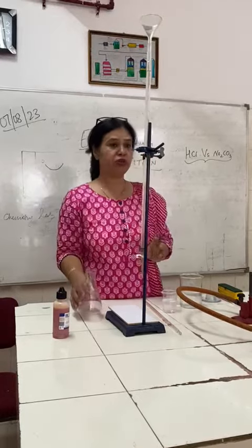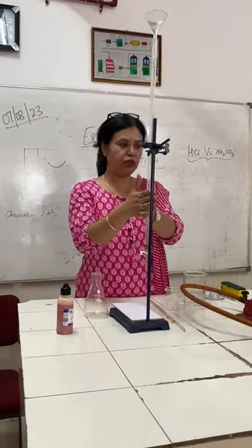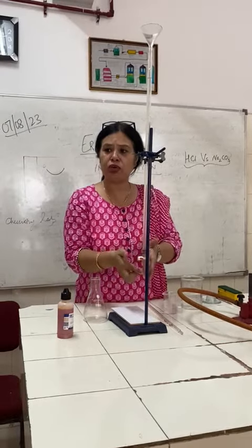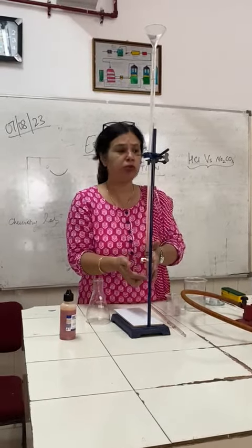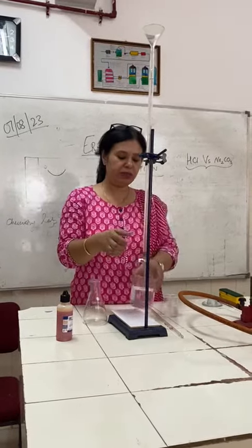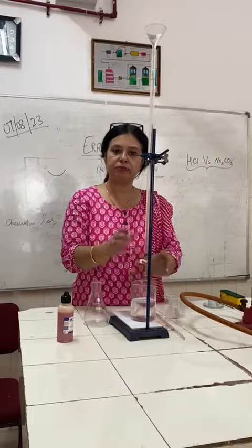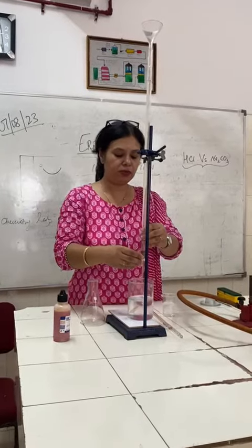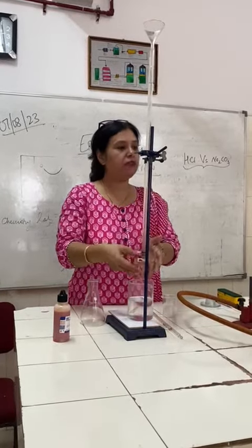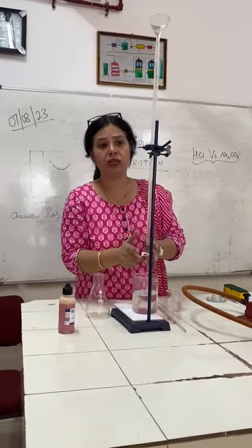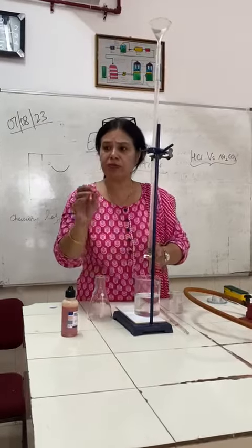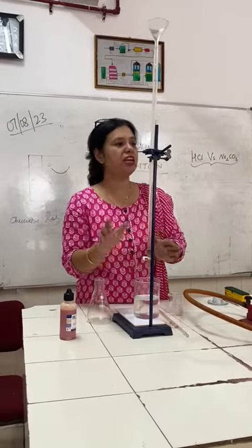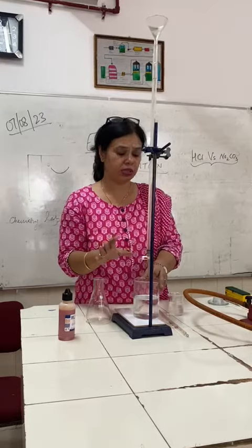The second mistake which we commonly do — we have to fill the apparatus up to the brim. Mostly students forget to fill it up to the brim. We have to put the beaker under the burette and open the tap so that it fills up to the brim with no bubble. Suppose a bubble is not going — it means it will be a constant error in all the readings. Do not worry about that.